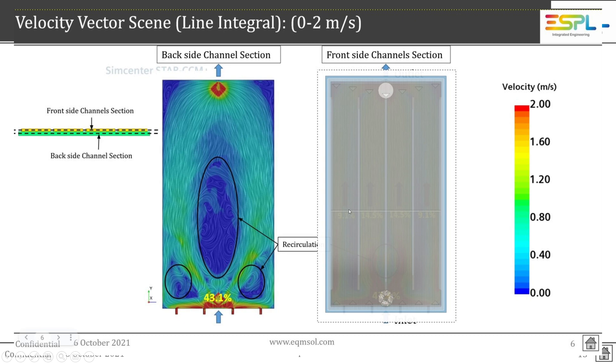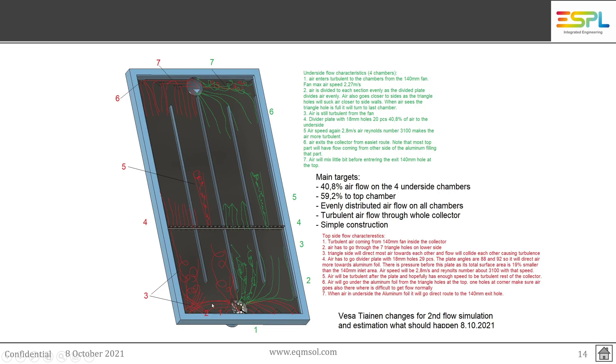There are new parts also modeled here, so not just made this shorter, but I have also made this kind of distributor baffle plate here, which will make sure that 40.8% of the air will go through the underside and 59.2% will go on the top side of the collector.